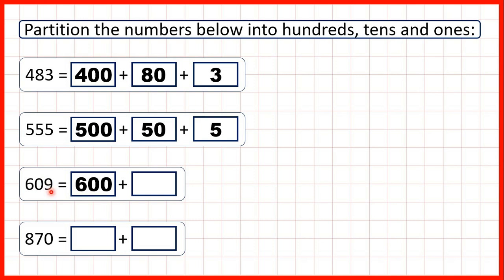We can move on to the 9, and because that's in our ones place value column, it just represents 9.